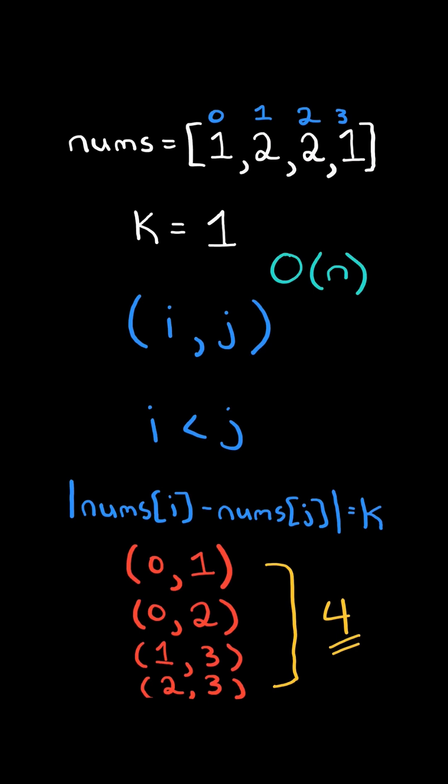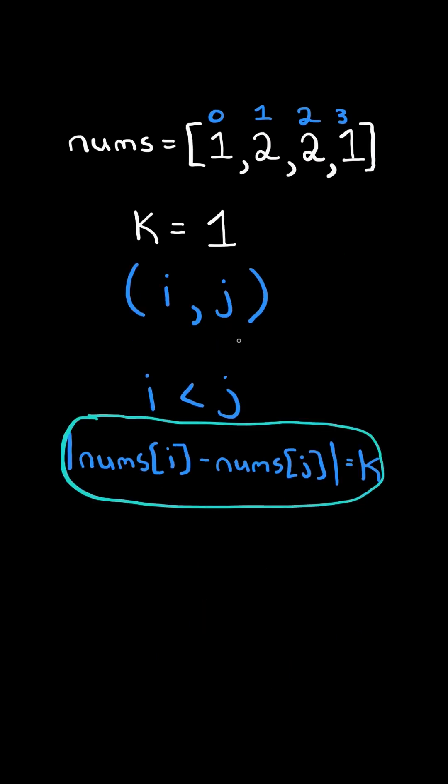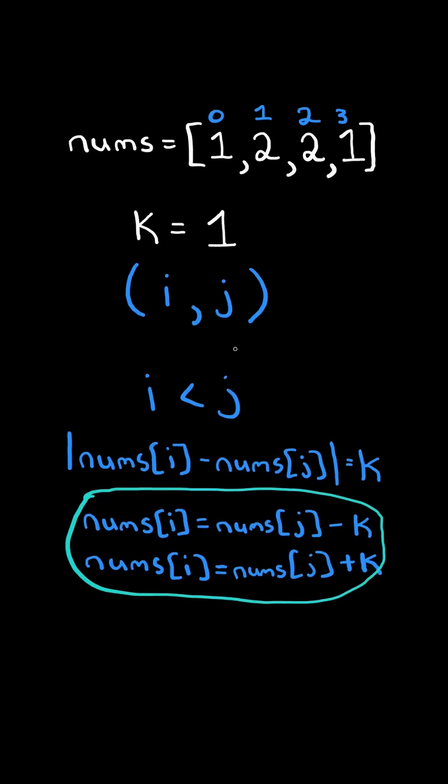We will solve this in O(n) time and space. Now if we rearrange this equation, nums[i] can be equal to nums[j] minus k or plus k.